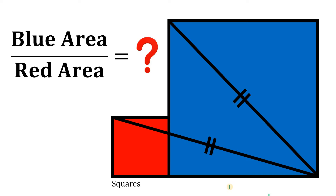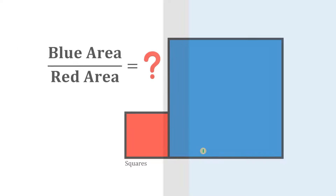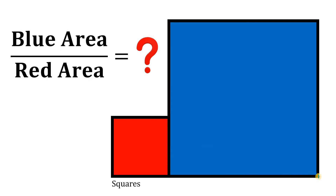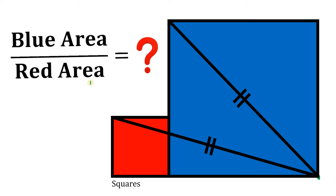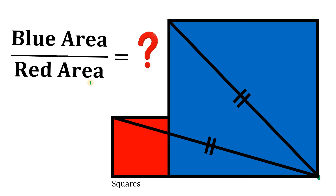Can you solve this geometry challenge? Here's the question. Given these two squares, from this vertex we draw two congruent segments. Our goal is to find the ratio of the blue area to the red area. Pause this video and see if you can answer this question, and post your answer in the comment section down below.